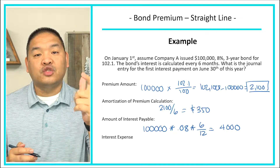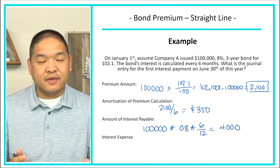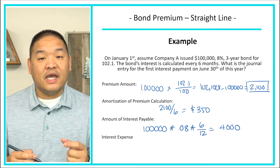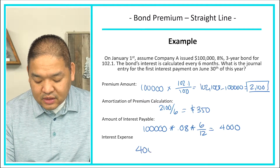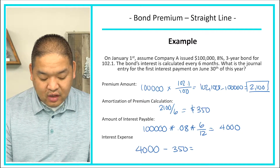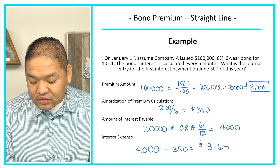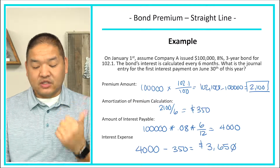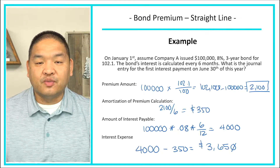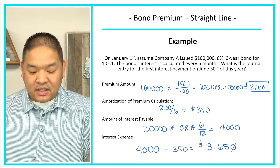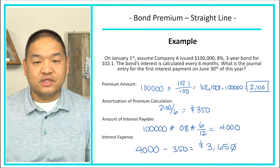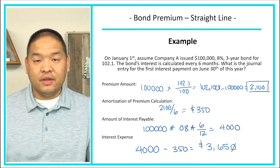What's the interest expense? The premium is going to reduce our interest expense. Without a premium, the interest expense would just be the $4,000 we pay. So to calculate interest expense, we take the $4,000 payment and subtract the premium amortization of $350, giving us $3,650. Our interest expense is $3,650 — lower than what we're paying because we're subsidizing it with the premium our bondholders paid when we first issued the bond.